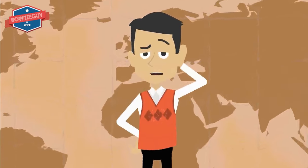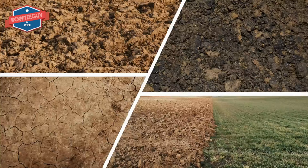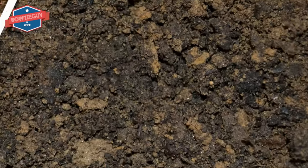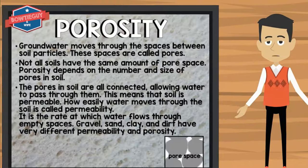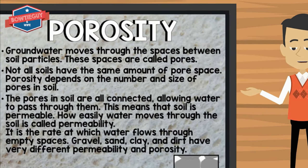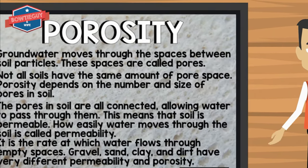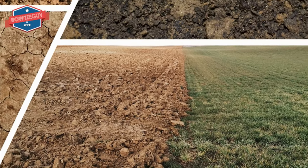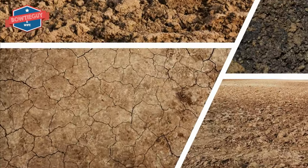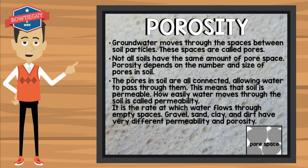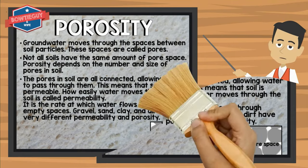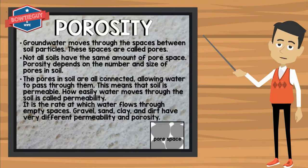Porosity. What is porosity? Groundwater moves through spaces between the soil particles. These spaces are called pores. Not all soil has the same amount of pore space. Porosity depends on the number and size of pores in soil. The pores in soil are all connected, allowing water to pass through them. This means that soil is permeable. How easily water moves through the soil is called permeability — it is the rate at which water flows through empty spaces. Gravel, sand, clay, and dirt have very different permeability and porosity.